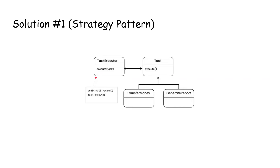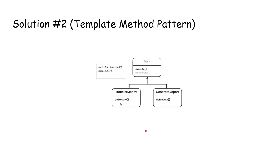The other way we can solve this problem is to use the Template Method Pattern. Here we have an abstract class called Task, and inside this class we have a method called execute. Inside this function we log the data and then call the doExecute function. This doExecute function is an abstract method inside the Task class, so any subclass that inherits from Task can implement its own doExecute function — for example TransferMoney or GenerateReports.